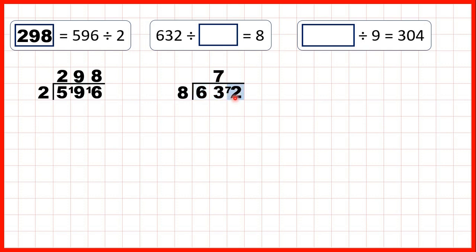So, now we have 72 divided by 8. That's exactly 9, because 9 times 8 is 72. So, our missing number is 79.